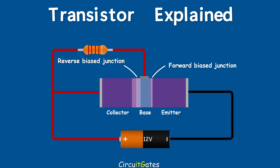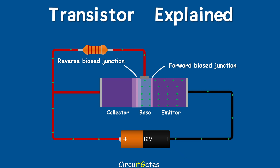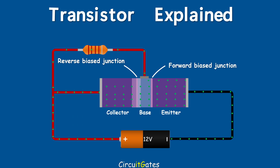When an NPN transistor's base-emitter junction is forward connected, only very little voltage is required to push electrons across the junction — usually equal to the barrier potential of 0.7V if the transistor is made of silicon. Since the base region is thin and lightly doped, it has very few holes as charge carriers, while the emitter region is heavily doped. A large number of electrons will enter the base region from the emitter region, and very few electrons will move from hole to hole in the base region toward the positive side of the battery. Most of the electrons that enter the base region, having nowhere else to go, are swept across the base-collector junction, attracted by the positive side of the battery connected to the collector lead, resulting in a high current flow through the base-collector junction. This is how a transistor works.